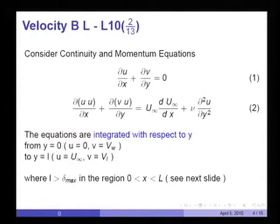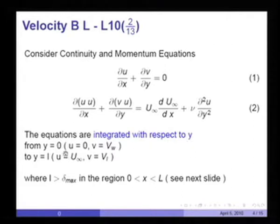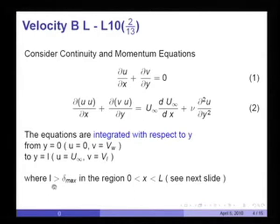Consider the continuity equation du/dx + dv/dy = 0, and the momentum transfer terms, pressure gradient term, and viscous term. These equations are integrated term by term with respect to y from y = 0, where u = 0 and v = vw, to y = L, where u = u_infinity and v equals some fictitious velocity v_L. L is chosen greater than delta_max in the region 0 to L.